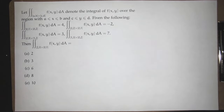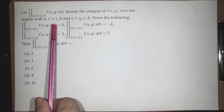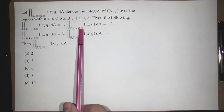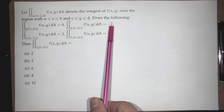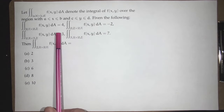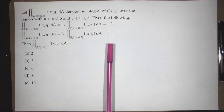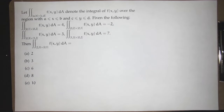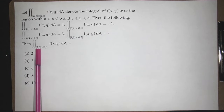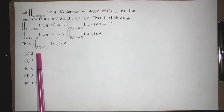Suppose we have the integral. Here's a rectangle: x goes from 0 to 1, y goes from 0 to 2, and when we integrate over that, we get 4. x goes 0 to 2, y goes 0 to 1, we get minus 2. When x goes from 0 to 3, y from 1 to 2, we get 3. If x goes from 1 to 3, y from 0 to 2, we get 7. The question: if x goes from 2 to 3 and y goes from 0 to 1, what do you get? The options are 2, 3, 6, 8, or 10.